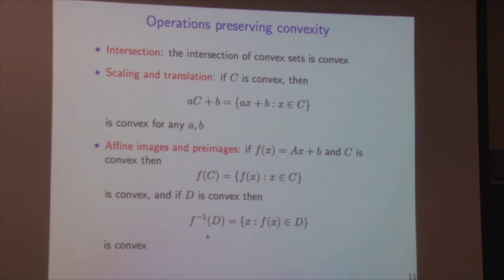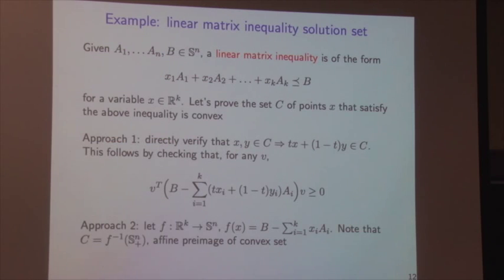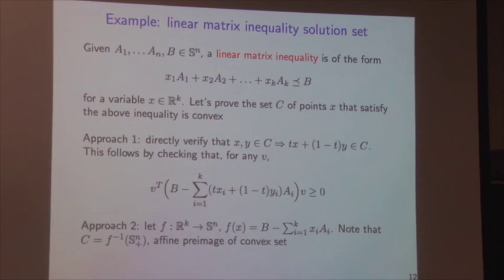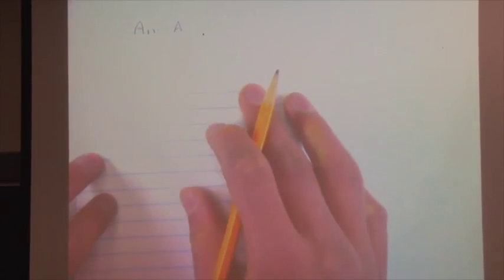A function can be strongly convex for one value of m but not for a larger m — m is the strong convexity parameter for the function. We say a function is m-strongly convex. Next we'll look at examples of convex functions, starting with univariate examples.